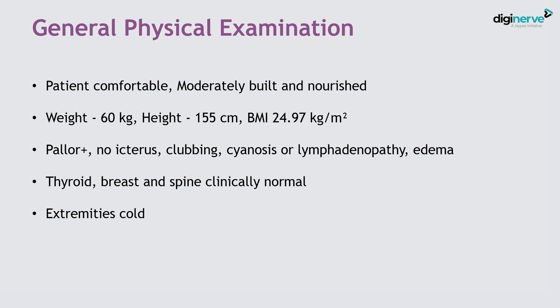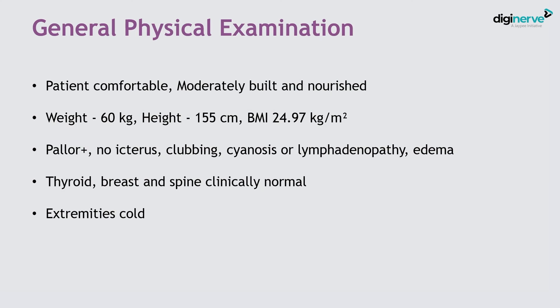General physical examination: the patient was comfortable, moderately built and nourished. Weight 60 kg, height 155 cm, BMI 24.97 kg/m². She had pallor, no icterus, clubbing, cyanosis, lymphadenopathy, or edema. Thyroid, breast, and spine appear clinically normal. Extremities were cold. The significance here is pallor, indicating either a leaking or ruptured ectopic.